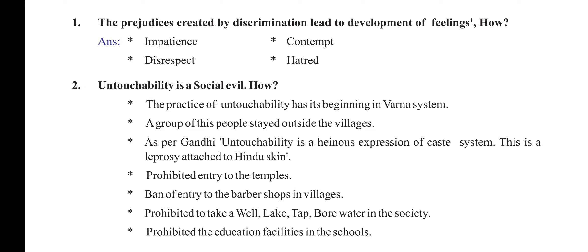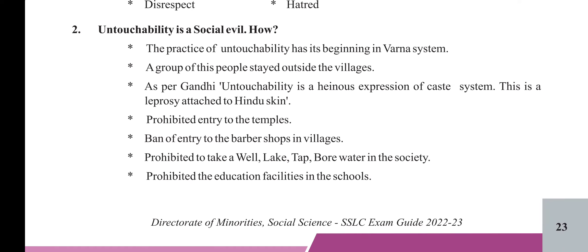Untouchability is a social evil. How? The practice of untouchability has its beginning in the Varna system. A group of people stayed outside the villages. As per Gandhi, untouchability is a heinous expression of the caste system — a leprosy attached to Hindu skin. Practices included: prohibited entry to temples, ban on entry to barber shops in villages, and prohibition from using wells, lakes, taps, and bore water in society.